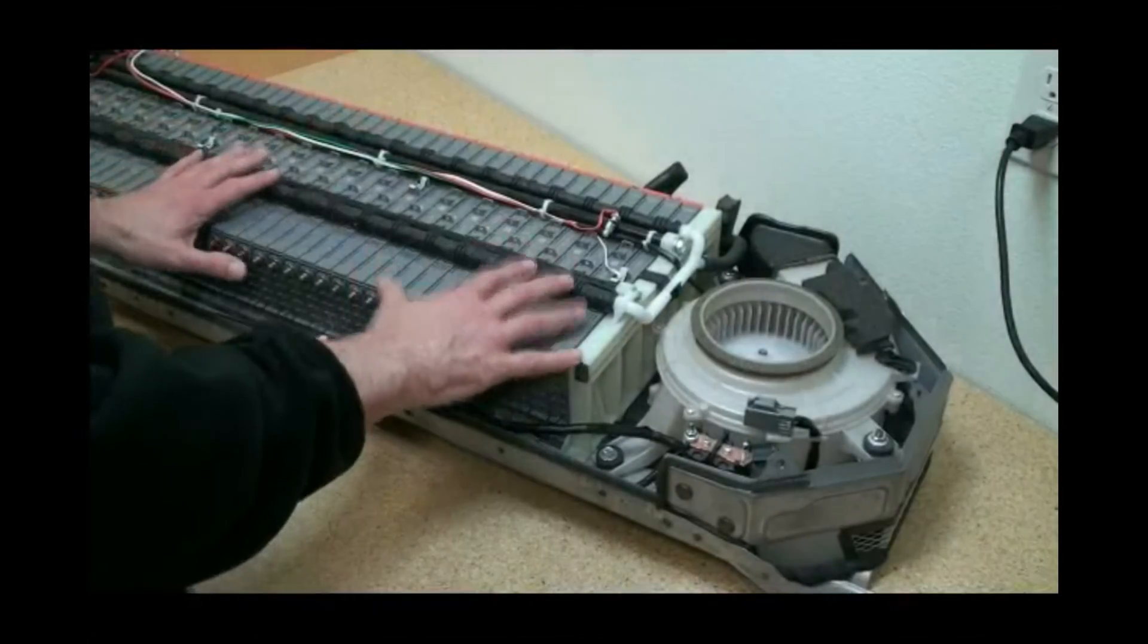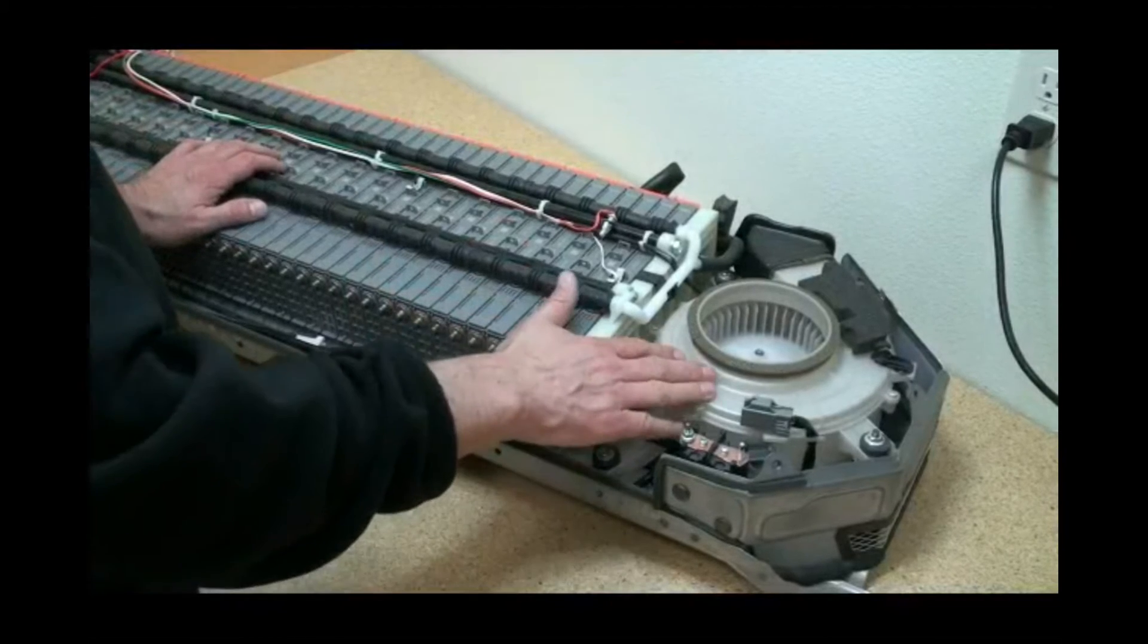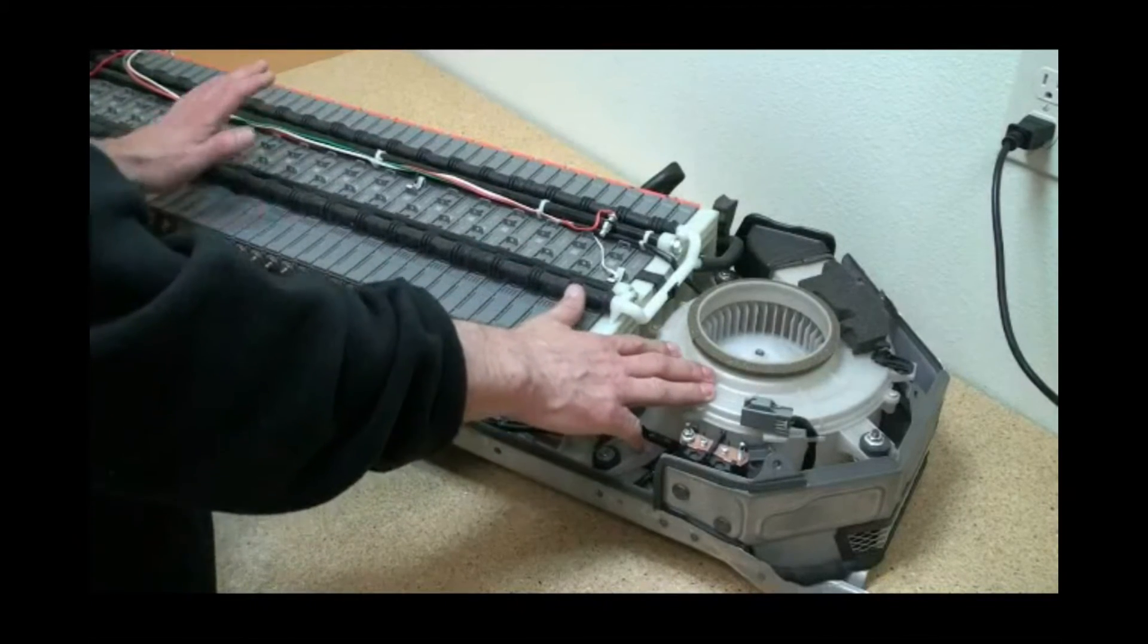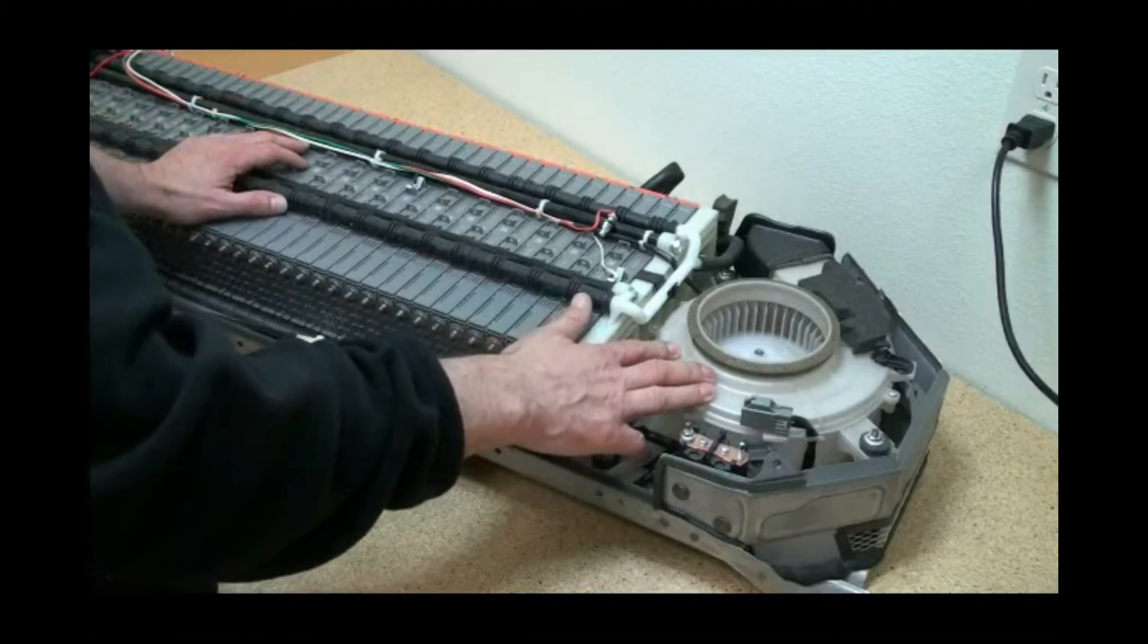Alright, so let's take a look at the inside of the GM 2-mode pack. As we can see over here, this is the cooling fan. All battery packs are going to have a cooling fan on them of some type.